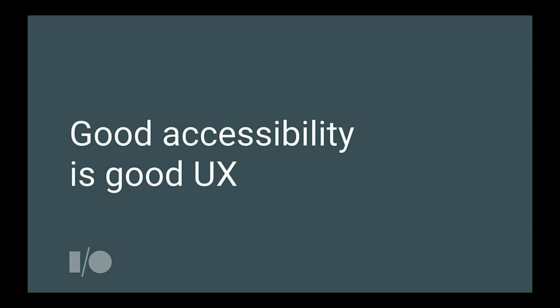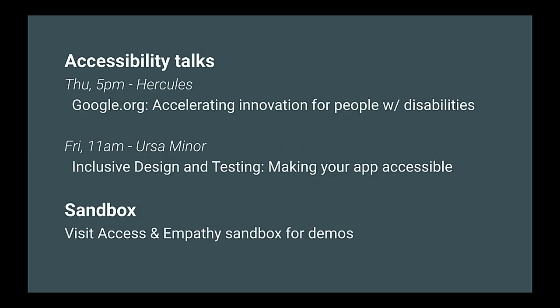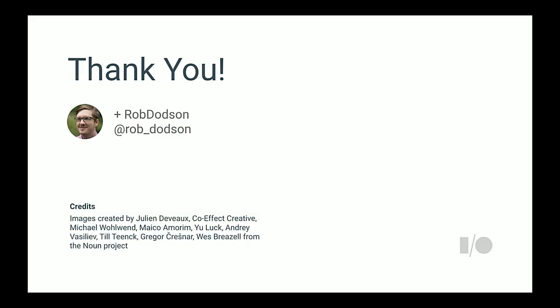Take this back to your team — scream it in your meetings. When you work on accessibility through every step of your process, what you're doing is making sure the final product you produce is significantly more polished and that more users can access and enjoy your experience. Go check out this course if you've been interested in the things we've been talking about — it's a multi-week course that goes way deeper on everything I've been showing. Also, there are more accessibility sessions here at I/O: this evening at 5 PM in Hercules, and tomorrow at 11 AM in Ursa Minor. Go check out the Access and Empathy sandbox — they always have the coolest new assistive technology, it's always my favorite sandbox. Thank you so much for joining me this morning, and I hope you enjoy the rest of I/O.